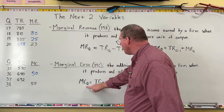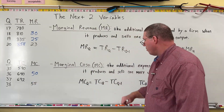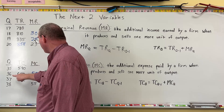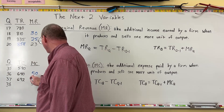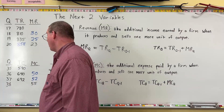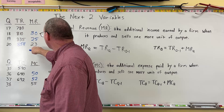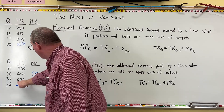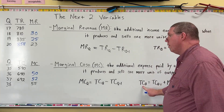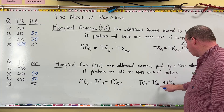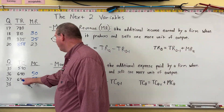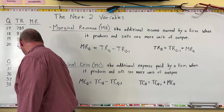Now for the 37th unit: marginal cost of 37 equals total cost of 37 minus total cost of 36 — because 37 minus 1 is 36. So 692 minus 640 is 52. We already know the marginal cost of the 38th unit, but we don't know the total cost for 38 units. We do the same thing as before: 692 (total cost for 37) plus the marginal cost for 38 — which is 55 — gives us 747 as the total cost for 38.